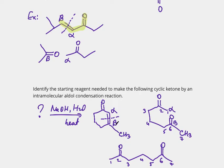To summarize: in order to predict where an aldol condensation product came from, first identify the alpha and beta carbons — alpha is next to the double bond=O, beta is the carbon next to alpha containing that double bond. Then break the bond between alpha and beta, and attach a double bond=O to the beta carbon. That is all that needs to happen to predict the starting materials of an aldol condensation.